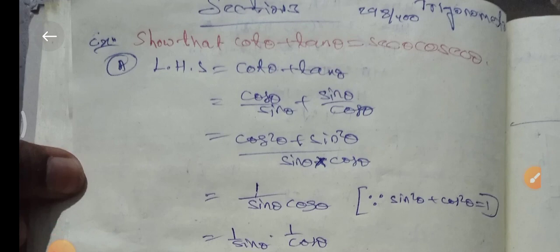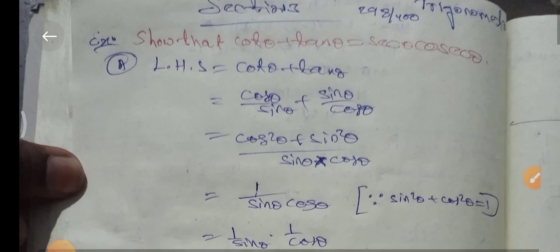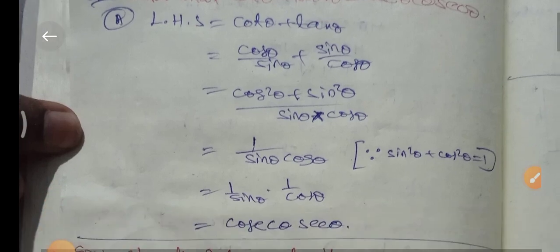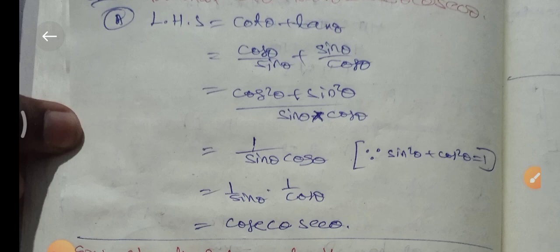So cot θ plus tan θ equals cos θ over sin θ plus sin θ over cos θ. Taking LCM as sin θ cos θ, we get cos²θ plus sin²θ all over sin θ cos θ.